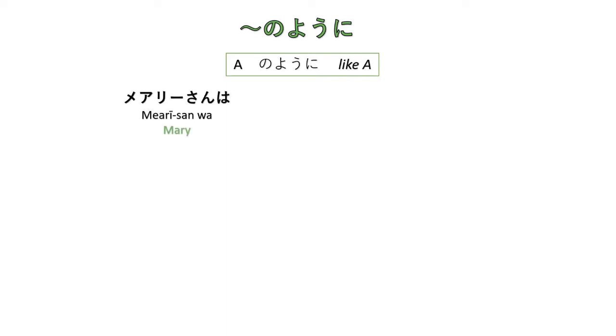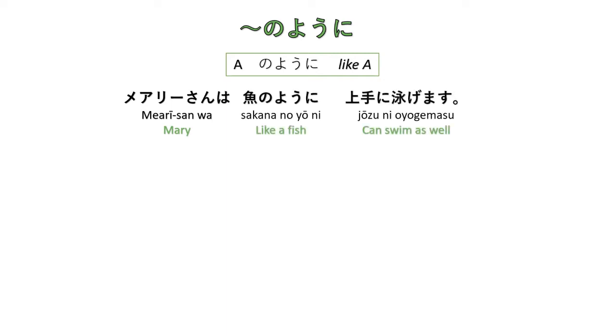First, のように (noyoni). This is the grammar pattern A のように, meaning 'like A' in English. For example: Mary-san wa sakana no yoni jouzu ni oyogemasu — Mary can swim as well as, or like, a fish. So sakana no yoni means 'like a fish'.